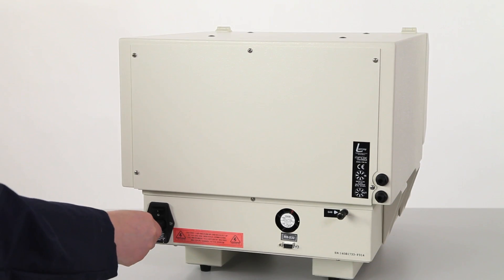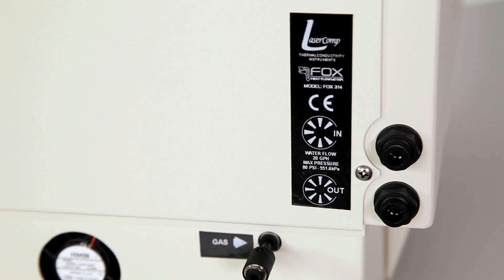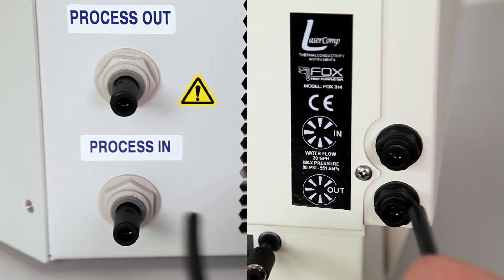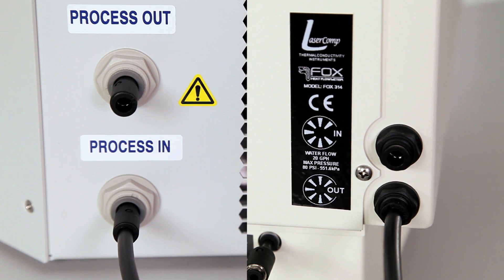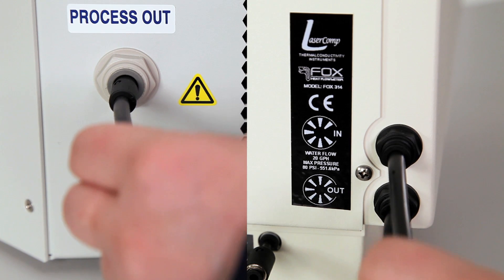Start with the power cable. We can now connect the chiller using the quarter inch water hose. Connect the inlet of the instrument to the outlet of the chiller, and the outlet of the instrument to the inlet of the chiller.